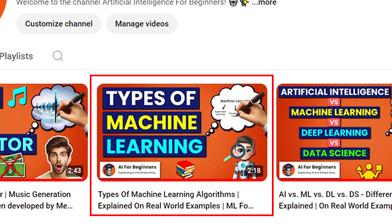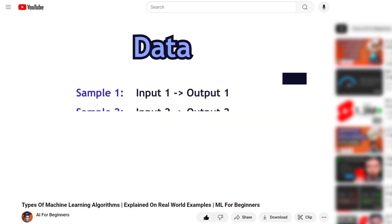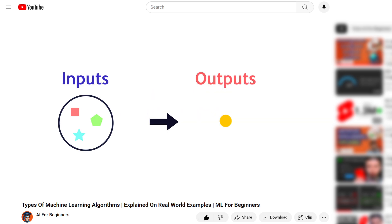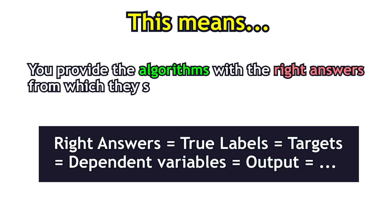If you watched our video on the different types of ML algorithms, you should remember that supervised learning refers to the machine learning algorithms that learn from labeled data. This means you provide the algorithms with the right answers from which they should learn.